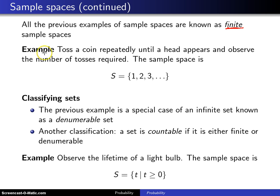This next example is one where you don't have a finite sample space. Toss a coin repeatedly until a head appears and observe the number of tosses required to get that first head. The sample space in this case is S equals, well let's think about each one of these.